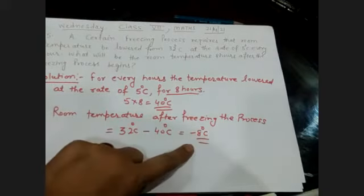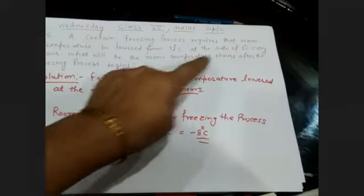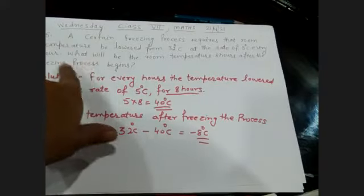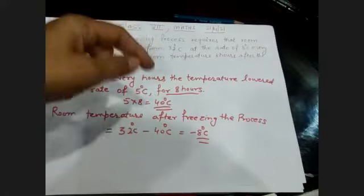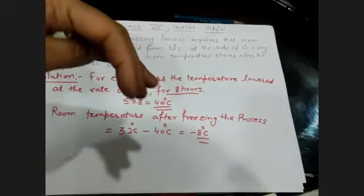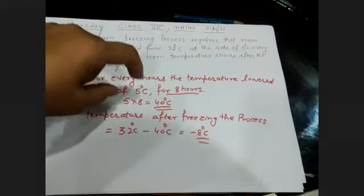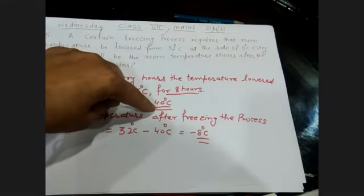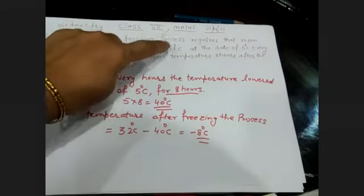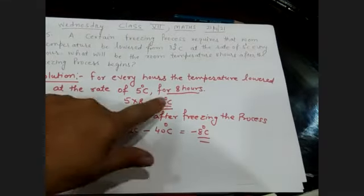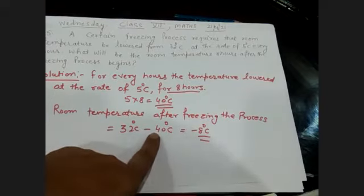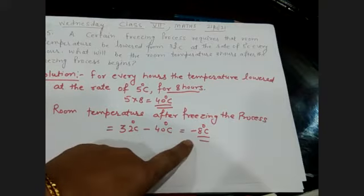Now the temperature is in the minus. The question asks: what will be the room temperature 8 hours after the freezing process begins? During those 8 hours, the temperature dropped continuously at the rate of 5 degrees Celsius, so 5 into 8 equals 40 degrees. It is lowered by 40 degrees Celsius, giving us minus 40 degrees. When we add 32 plus minus 40, it becomes minus 8 degrees Celsius.